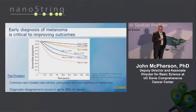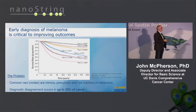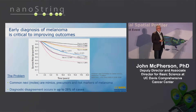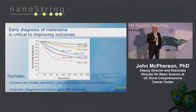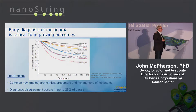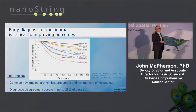Like all cancers, early detection is one of the keys for melanoma. These are survival curves — as the curve goes down, people are dying more quickly. Stage one goes all the way down through stage four, doing more poorly. One of the problems is that we all have common nevi or moles. You've all got funny-looking moles. These are often just regular moles, but sometimes they mimic melanoma. They're also precursors and risk markers for melanoma as well.